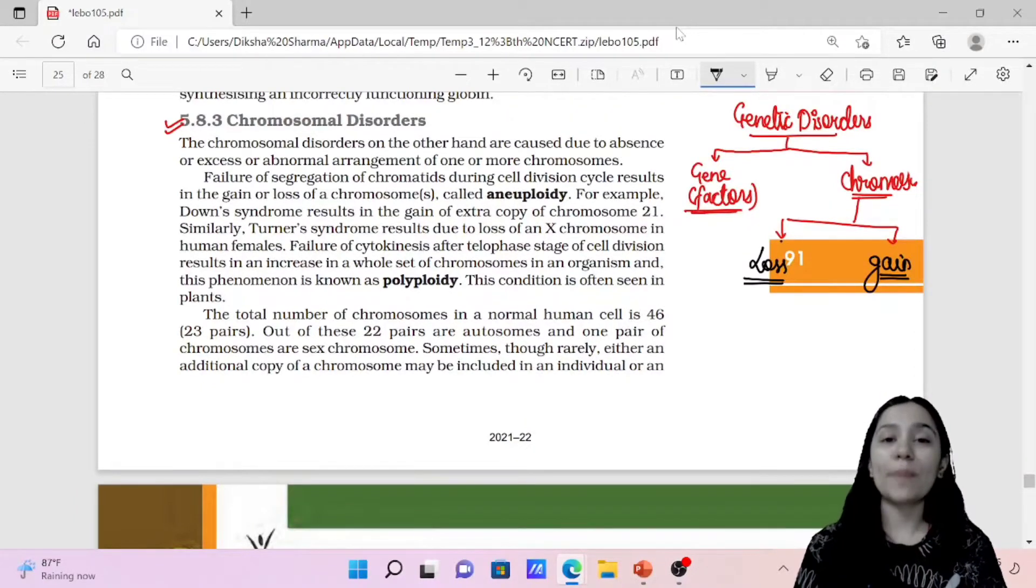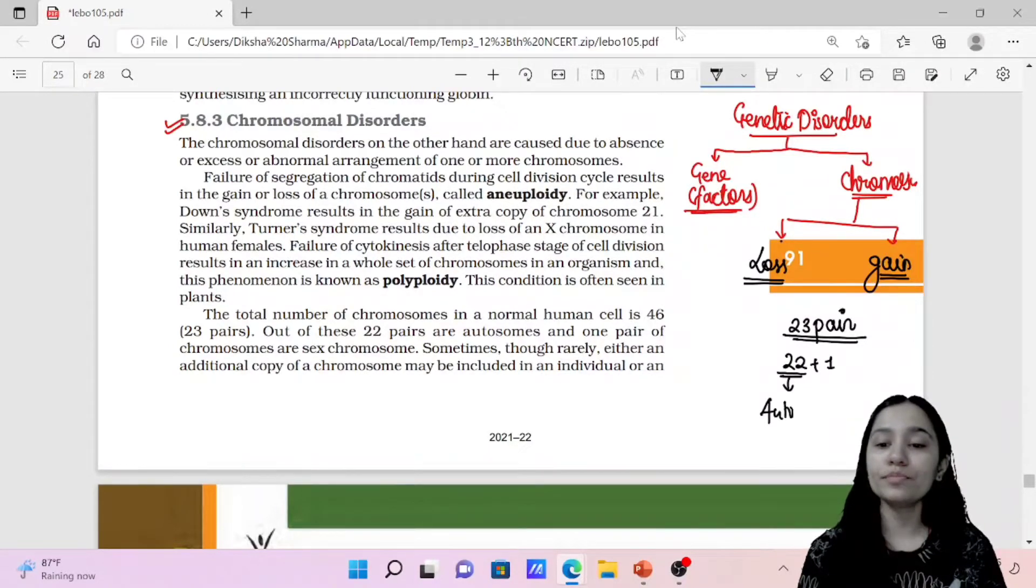Now I am expecting this because you will know humans have how many chromosomes. It is 23 pairs of chromosomes. So here we are going to write this 22 plus 1 because 22 chromosomes are your autosomes and this one pair of chromosomes is sex chromosomes. So 23 pairs of chromosomes, total 46 chromosomes humans have.